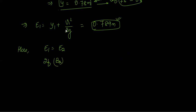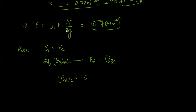For the width to be minimum, the flow at the throat section must be at critical condition. This means E2 equals E2 critical. We know that E_critical = 1.5 × Yc, and for a rectangular channel, Yc = (q²/g)^(1/3). So: E2c = 1.5 × (q2²/g)^(1/3), where q2 = Q/B2_minimum.